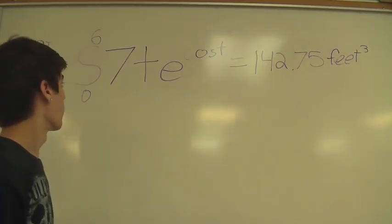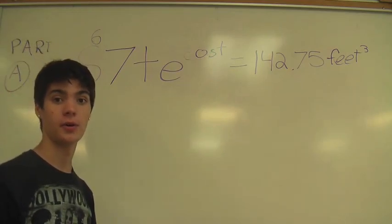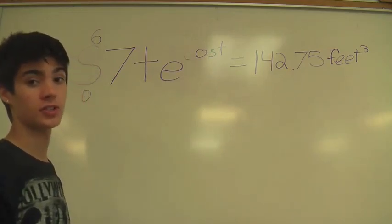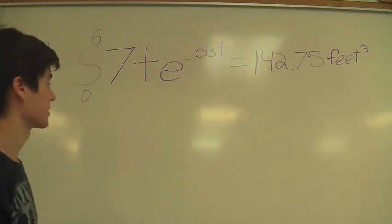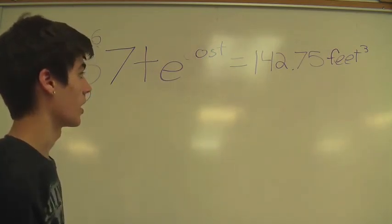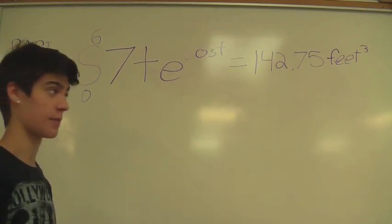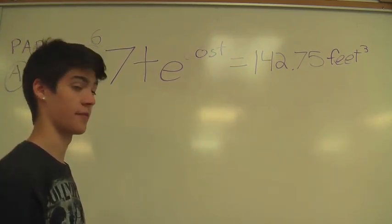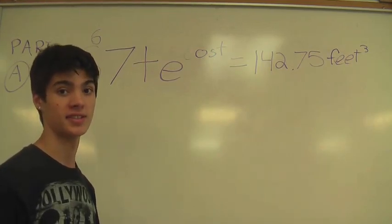The first part of the problem was to find the amount of snow accumulated by 6 a.m. To do this, we took the integral from 0 to 6 of 7t e to the cosine of t, which is the rate of change for snow accumulation, and we came up with 142.75 cubic feet accumulated by 6 a.m.